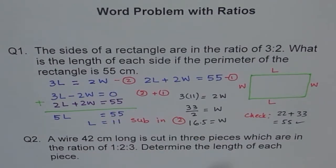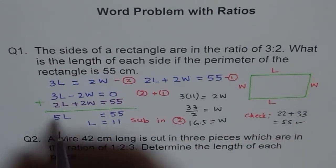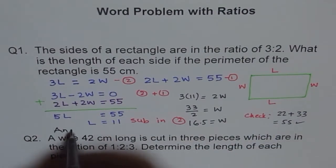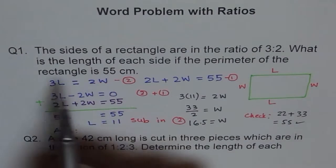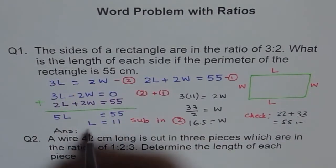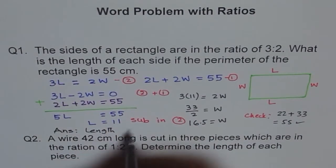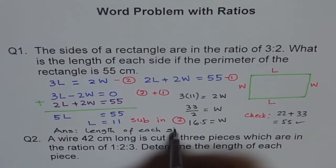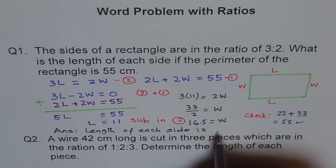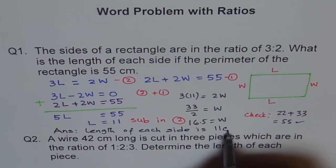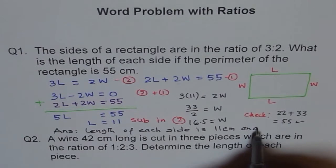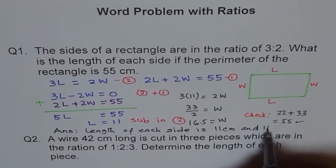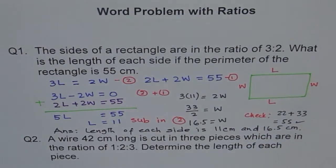Since the unit is in centimeter, we should write our answer as that. Length - we should write the answer very clearly. What is the length of each side? Length of each side is 11 centimeter and 16.5 centimeter.